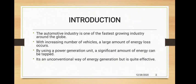By using a power generation unit, a significant amount of this energy can be tapped. It is also known as a Road Power Generator. It is an unconventional way of generating energy, but it is quite effective. The rapid increase in demand for electricity and recent changes in environmental conditions such as global warming led to a need for a new source of energy. Hence, RPG is a technique of generating electrical energy using roads.